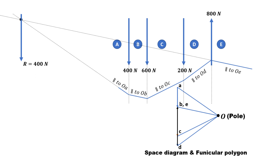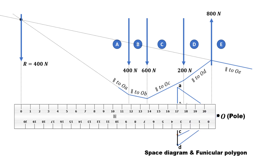We have to find the location of this resultant from the 400N force. We can measure that distance, which comes out to be nearly 11.8cm as you can see over here. In this way, we can find out the magnitude and location of the resultant using the polar diagram and the funicular polygon — the polygon we have just drawn is the funicular polygon. Thank you very much for watching.